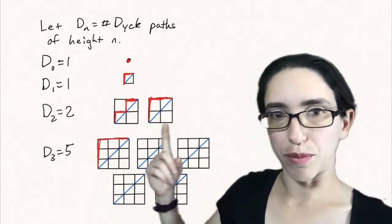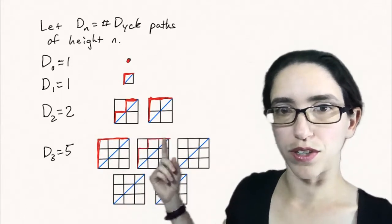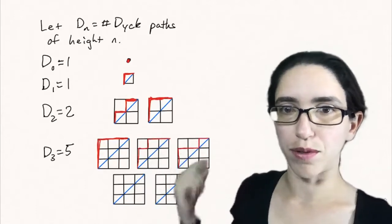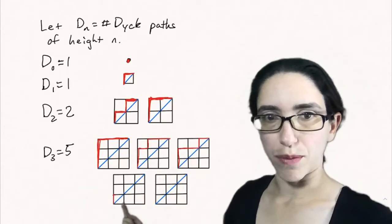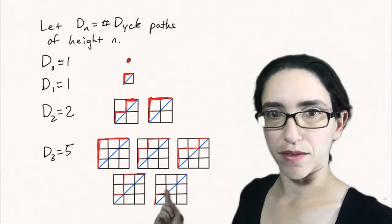Let's try to draw out all of the Dyck paths of height 3. You can either go all the way up and all the way over, or you can go up by 2 and then start going over and up, or go up by 2, over by 2 back to the diagonal, and then up and right. The fourth possibility is going up by 1, over, and then do a Dyck path of length 2 here.